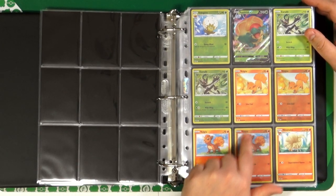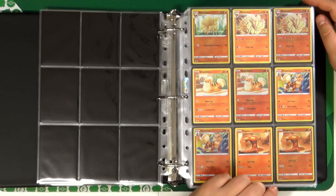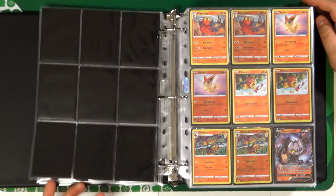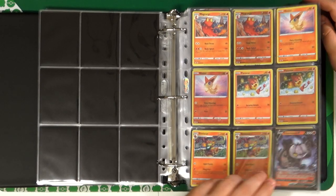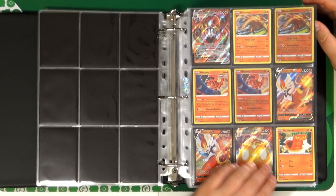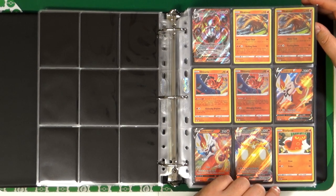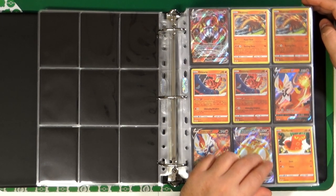Vulpix with this double artwork and also Ninetales. Victini, Pansear and Simisear, Chandelure VMAX. Oricorio, a really useful card in the TCG in case you play a Fusion Strike deck.